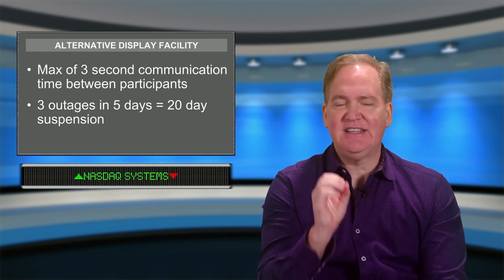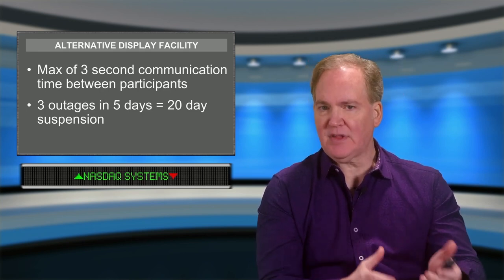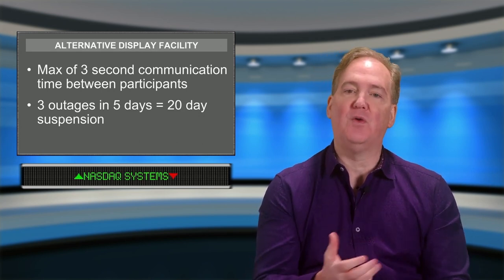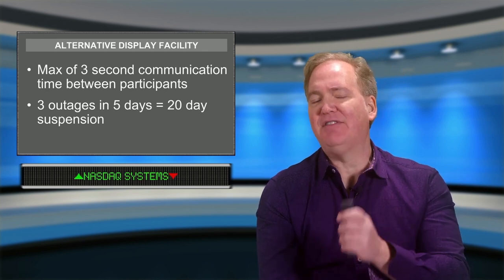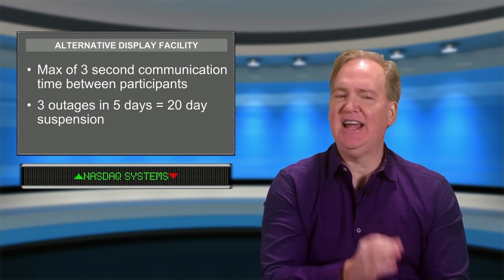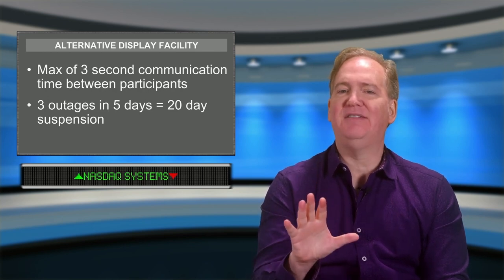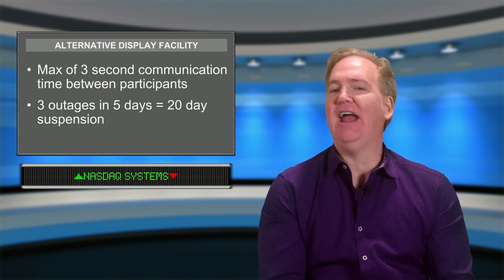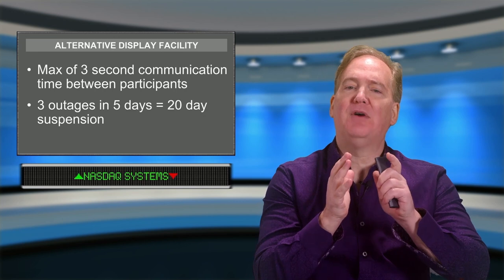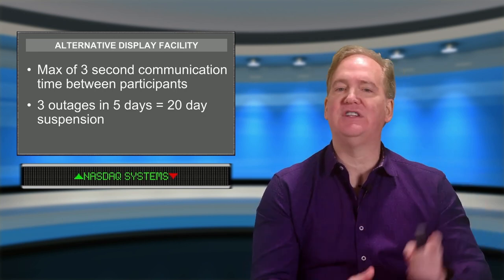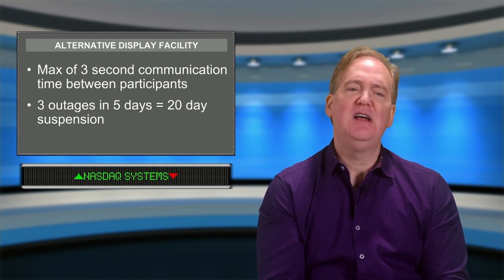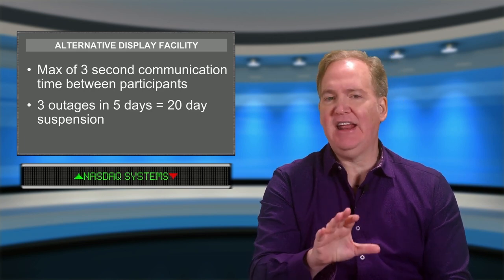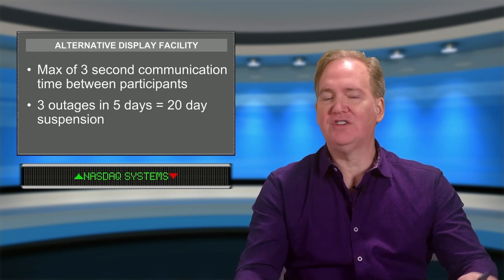NASDAQ will continuously test these third-party connectivity providers' access to the quotes for the broker-dealer. If the broker-dealer fails this test three times in five days, they will be prohibited from quoting any security in the ADF for 20 days. So if a market maker is displaying quotes in the ADF for 20 or 30 stocks but only one stock fails the speed test, they're out of the ADF for 20 days on all stocks. That's an important test point.